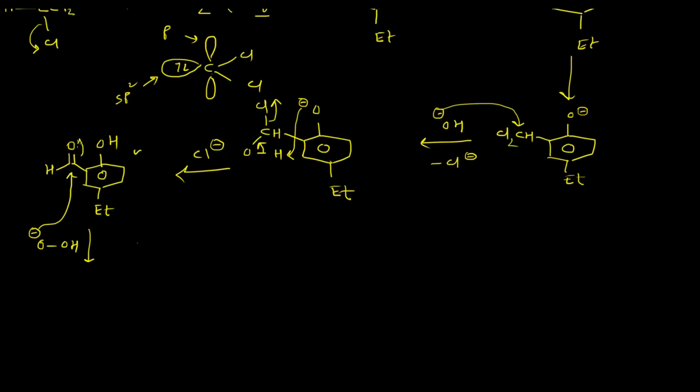This will then attack this carbonyl center, which will form this particular species. It will then undergo an intramolecular rearrangement where this O- will form a carbon-oxygen double bond and this total aromatic group will migrate to this oxygen center. OH- will leave from the system. This reaction is known as Dakin reaction.